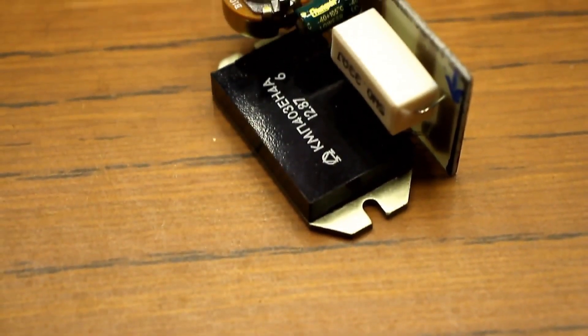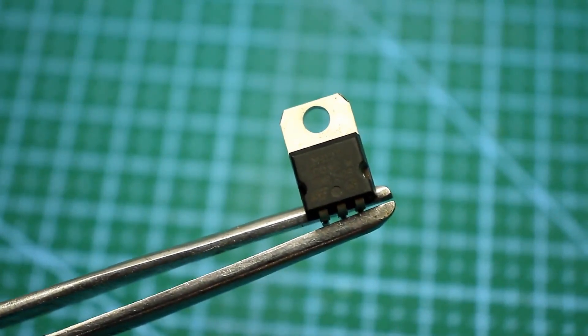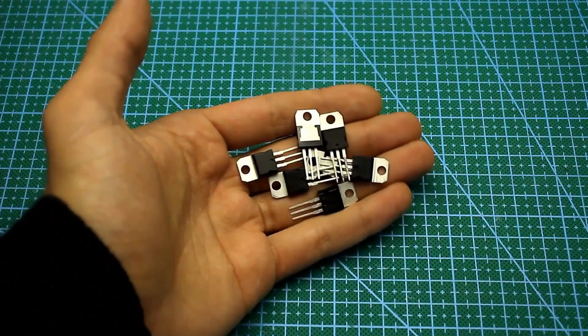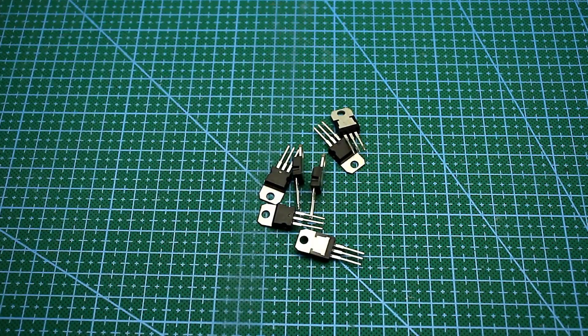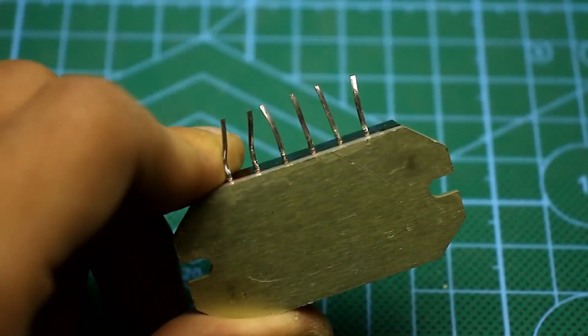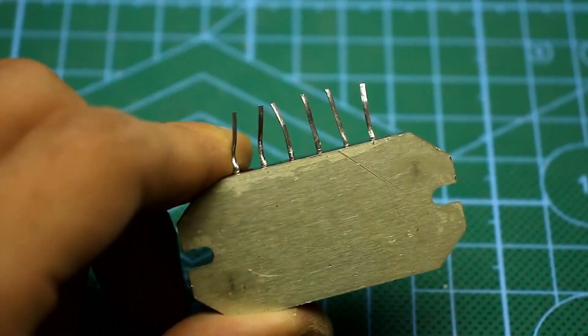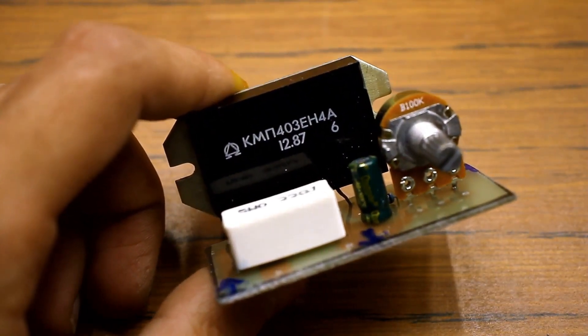Today, such microchips are not popular because their counterparts are much cheaper and more compact. Our microchip is similar in characteristics to the popular integrated regulator 7812. It's an entire family of microchips. In my hands is the KMP403EN-4A, and today we will see how it is constructed and what it is capable of.